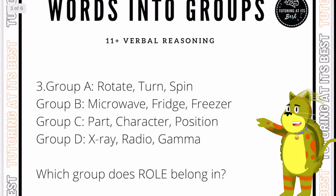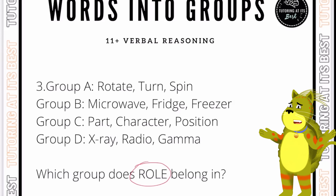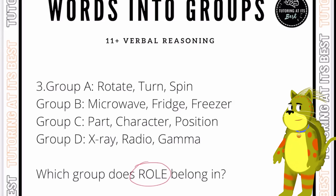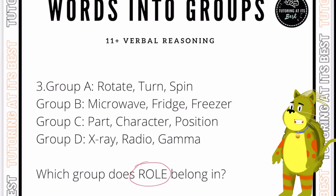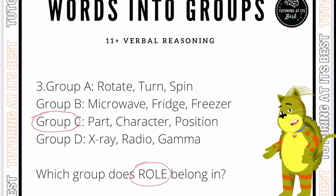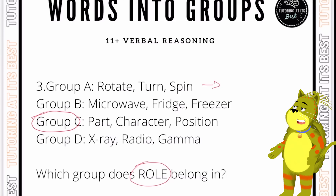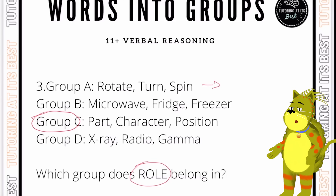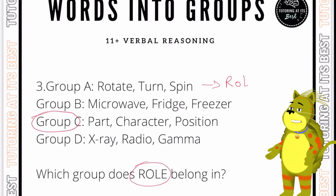Question number three: we're now looking for the word 'role'. Instantly we could be working with synonyms. The word 'role' is the part an actor plays in a film or a play, so it would go into group C. However, if we take a look at group A, those words are synonyms for 'roll' — but look at the spelling: it has a different meaning and a different spelling.